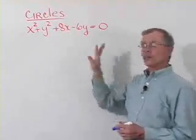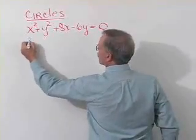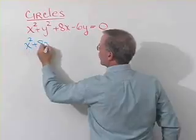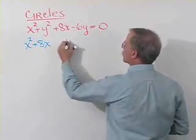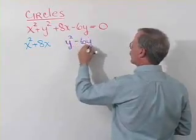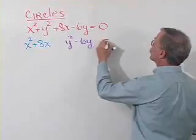So let's rearrange the terms and take another look. We'll have x squared plus 8x. We'll also have y squared minus 6y, and all that's still equal to 0.